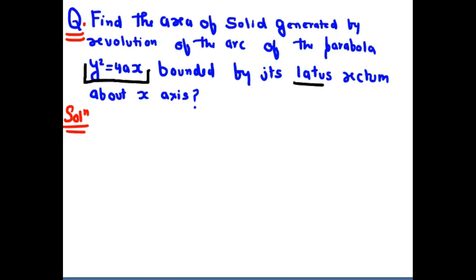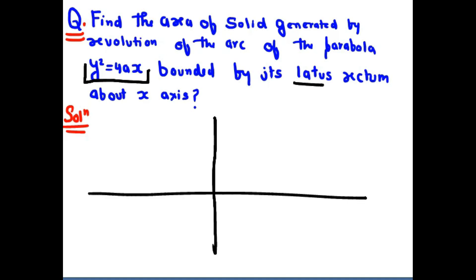Let's draw what is given. y² = 4x — this is a right-handed parabola. y² = 4x is the right-handed parabola.